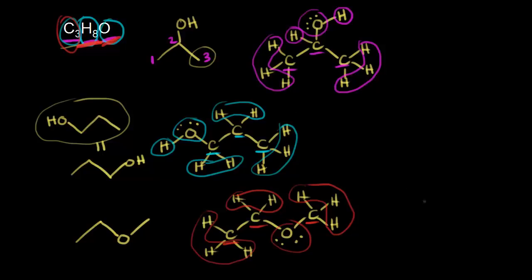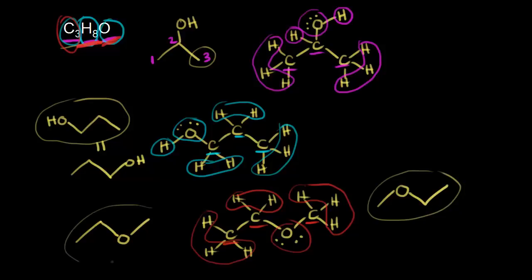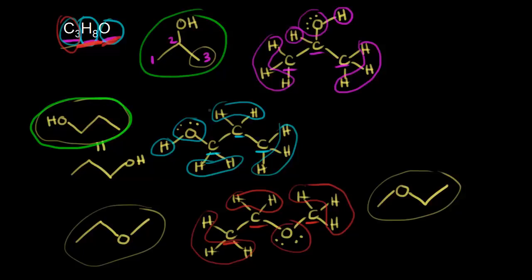Some students might say we could draw this in a different orientation, but that's just another way to draw the same molecule — it has the same connections, so it's not a new structural isomer. We have a total of three structural isomers with the molecular formula C3H8O. As you go further in organic chemistry, you'll learn that the first two isomers — the ones with an OH — are called alcohols, and the last structural isomer is called an ether. We'll cover that more in other videos.